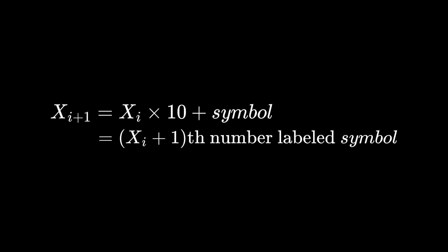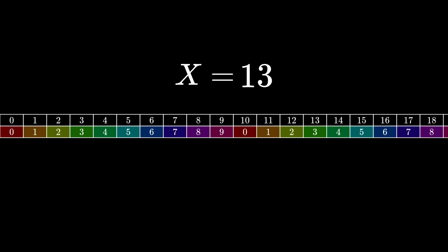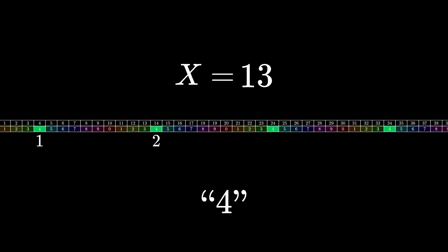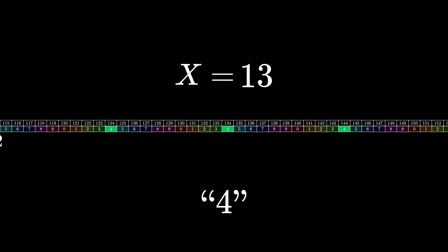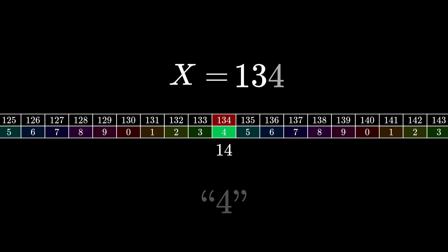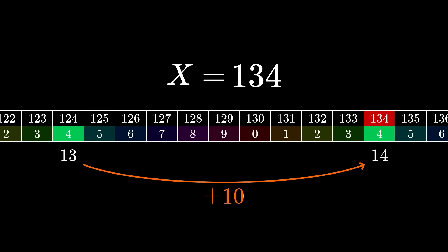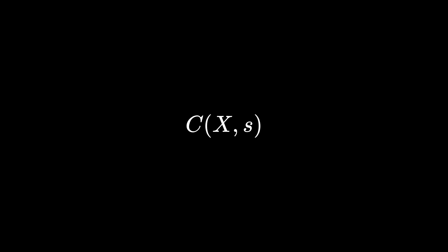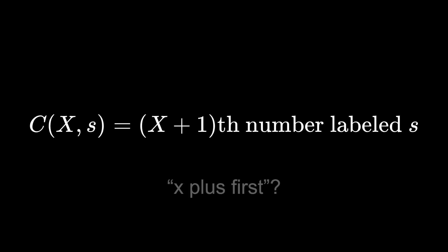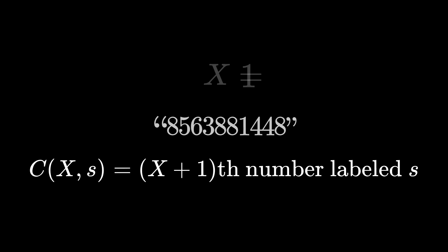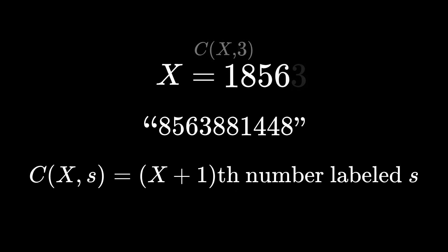Then you can also represent encoding a symbol as looking at the set of numbers labeled with that symbol and counting x plus 1 of them. So, if x is currently 13, which means we've already encoded a 3, and we want to encode the symbol 4, which should make x 134, we look at all the numbers labeled 4 and count 14 of them. And we set x to 134. This works because each number labeled 4 is 10 numbers away from the last, so counting by x plus 1 just multiplies x by 10 with an offset of 4.